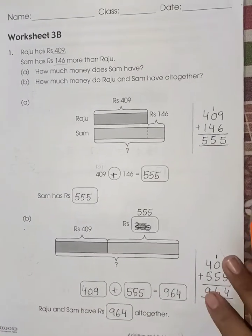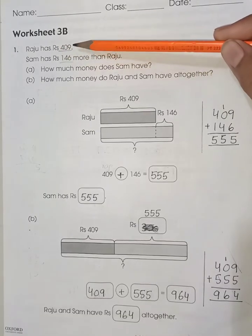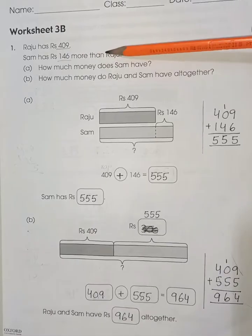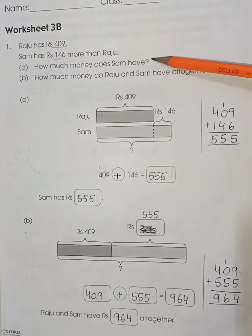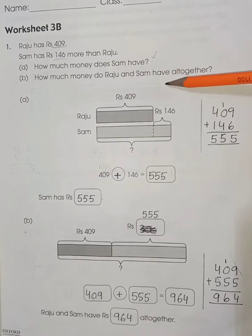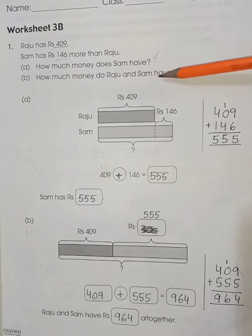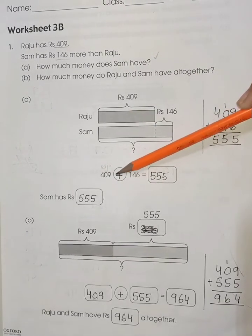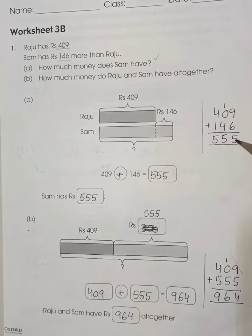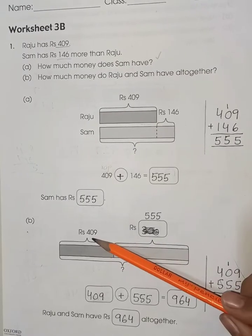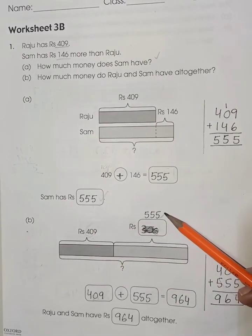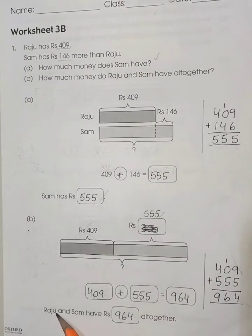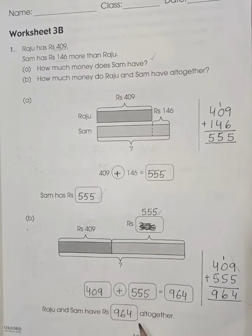Now worksheet number 3B, page number 35. Raju has 409 rupees. Sam has 146 rupees more than Raju. How much money does Sam have, and how much money do Raju and Sam have altogether? First find Sam's money: 409 plus 146 equals 555. Sam has 555 rupees. Now add Raju's 409 and Sam's 555 — Raju and Sam have 964 rupees altogether.